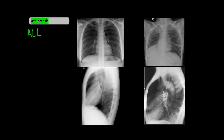For the right lower lobe, on the PA, this is what the normal right lower lobe looks like. With right lower lobe atelectasis, it collapses downwards, and you start to see silhouetting of the right diaphragm. Note that the right heart border is still visible — the right middle lobe is the one in contact with the right heart border, not the right lower lobe. On the lateral, the normal right lower lobe distribution is here, and with atelectasis, the oblique fissure border shifts down and back.